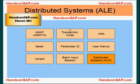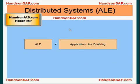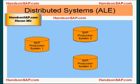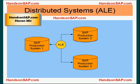Let's talk about distributed systems — ALE. ALE stands for Application Link Enabling. So what is the benefit of ALE? Let's imagine three SAP systems running individually — three separate SAP installations: production system 1, 2, and 3. Sometimes a client may decide to go for different installations, or for whatever technical reasons that may happen.